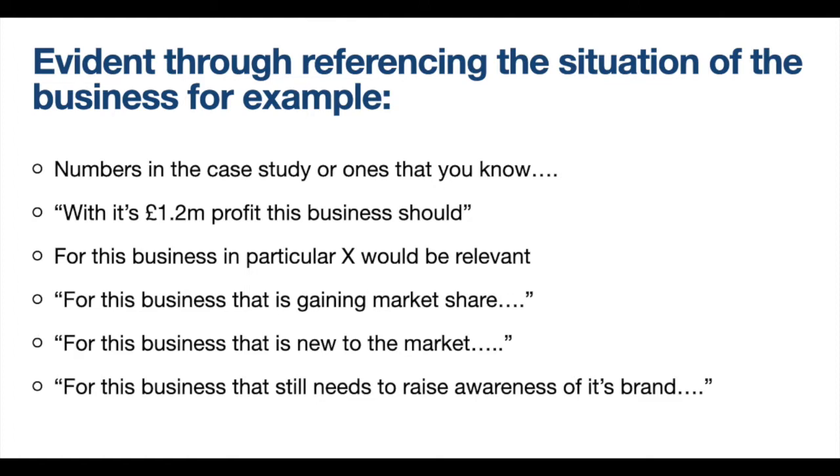That is writing in context. Another example is saying 'for this business in particular, this would be more relevant.' You're acknowledging whether it's new to the market, well established, losing market share, or gaining market share. What you recommend to these businesses will be very different depending on their situation.